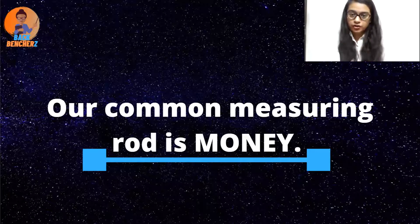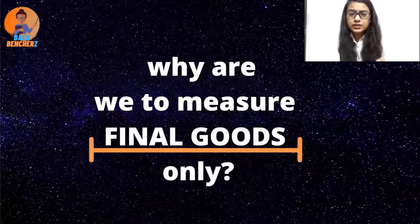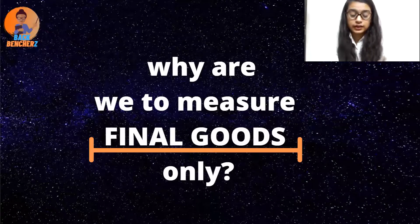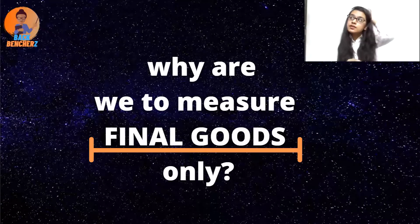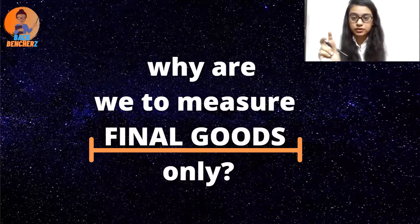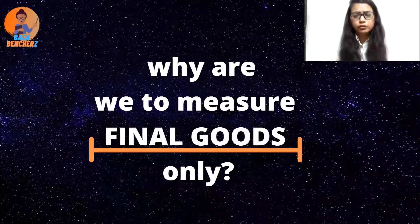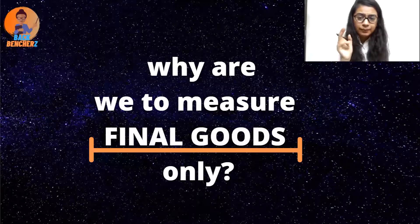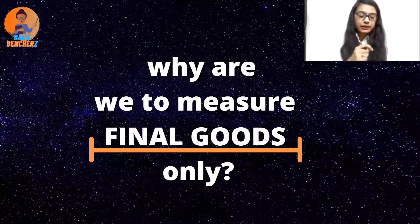Another question is: why do we measure only final goods for the total flow of production? Why do we use aggregate measures based on final goods only? It is very simple — we do not use intermediate goods because it will lead to double counting.